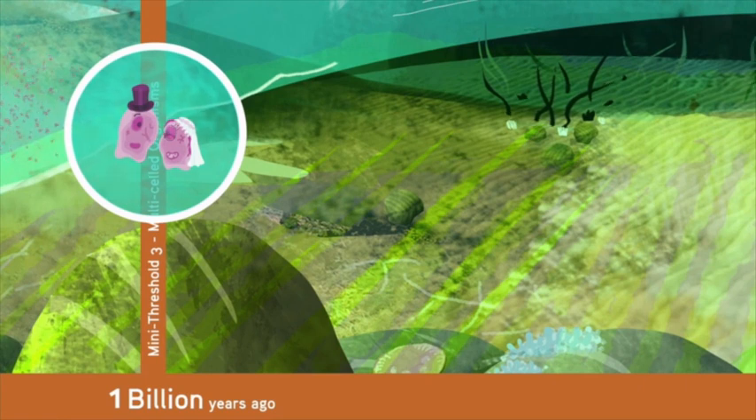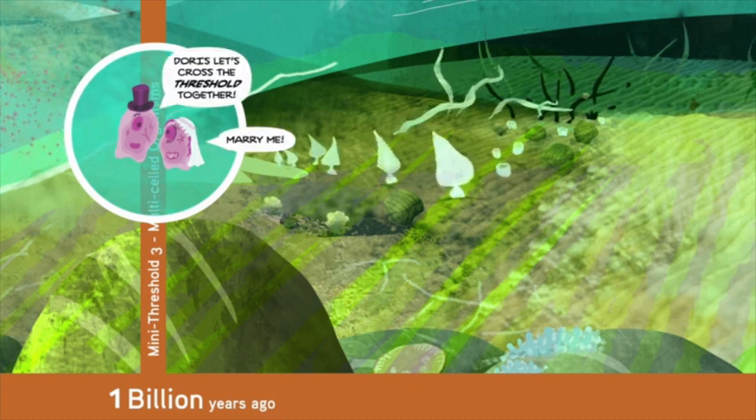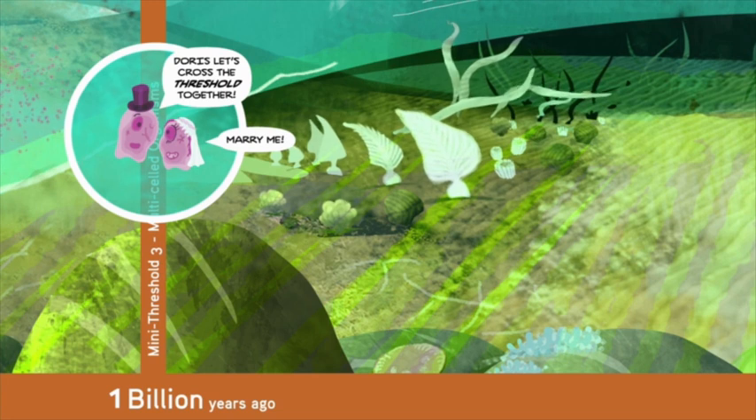Around 1 billion years ago, we crossed mini-threshold number 3, the introduction of the first multicellular organisms. In the same way specialized organelles came together to form more complex eukaryotes, different eukaryotes came together to form even more complex life forms. These organisms could contain billions of cells, each with a different function, but all sharing the same DNA, so they worked together.